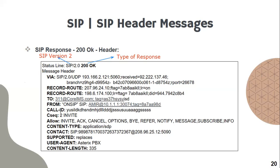Then we have the Content-Type, which is application SDP. The Call ID will be the same as in the INVITE, since this is the Call ID of the dialogue. For Contact, the responding side tells the caller to reach it at this proxy server address, and the user agent here is an Asterisk PBX — something like a call center. The Content-Length is the SDP body, which is 335 bytes. There is also a Record-Route, inserted by the proxy so that future requests will continue to go through this proxy.